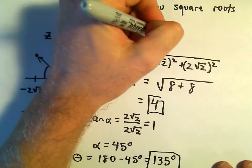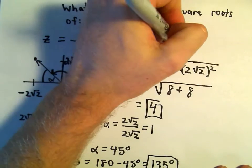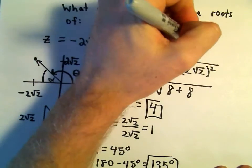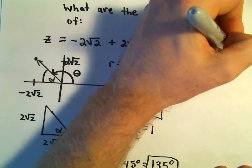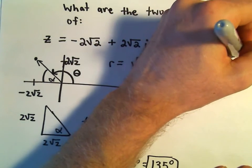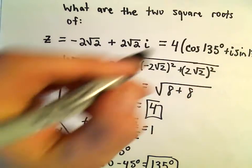So it says we can really rewrite our complex number as our r value, which is 4.